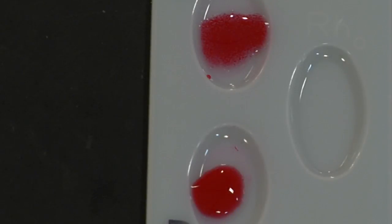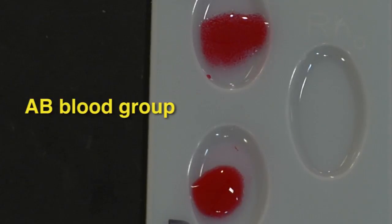Finally, I will observe the result. In this first sample, I see some clumping occurring in both well A and well B. This clumping is called agglutination. Blood that contains A antigens will agglutinate in the presence of the anti-A serum, and blood containing B antigens will agglutinate in the presence of the anti-B serum. This agglutination lets us know that the sample is from someone whose blood is in the AB blood group.